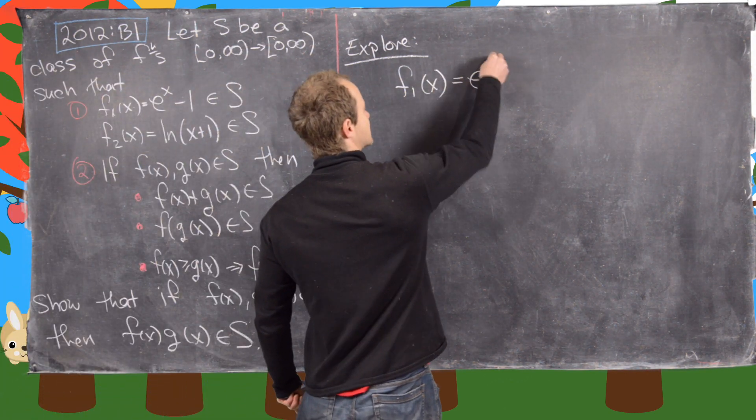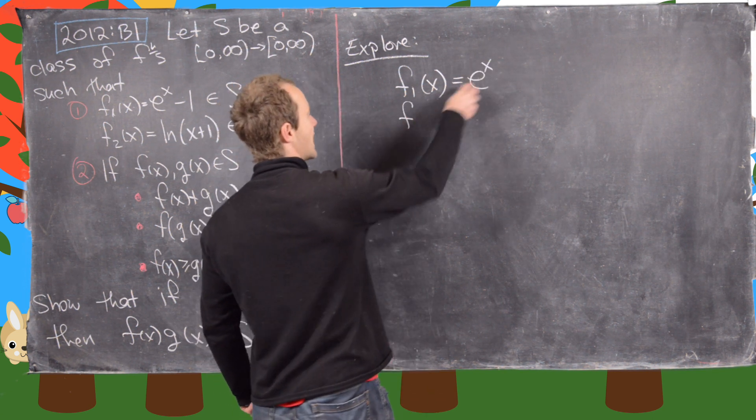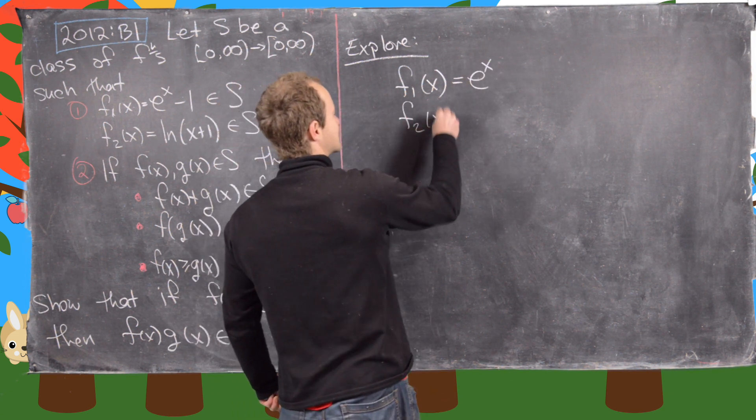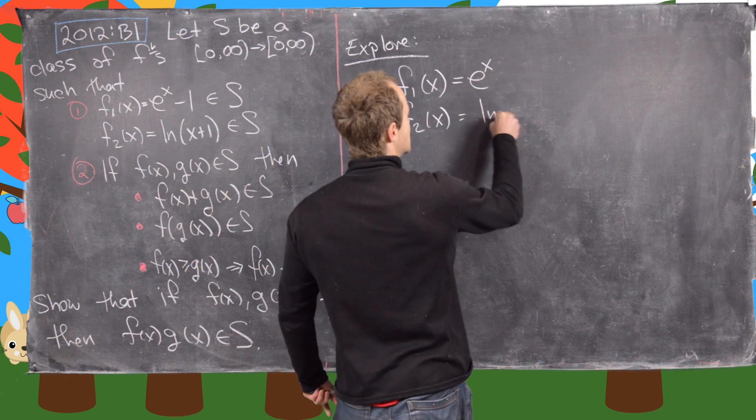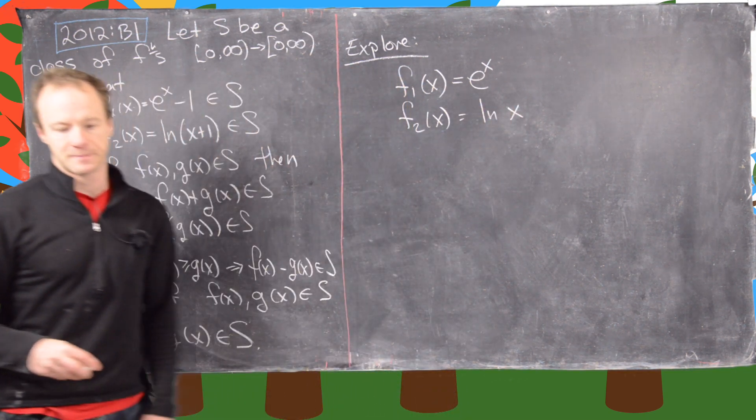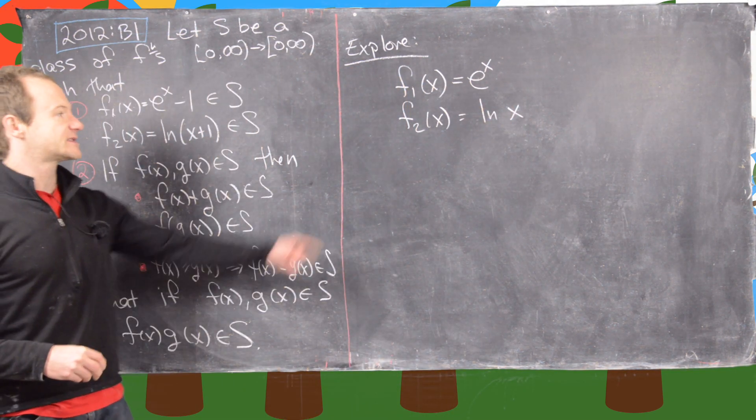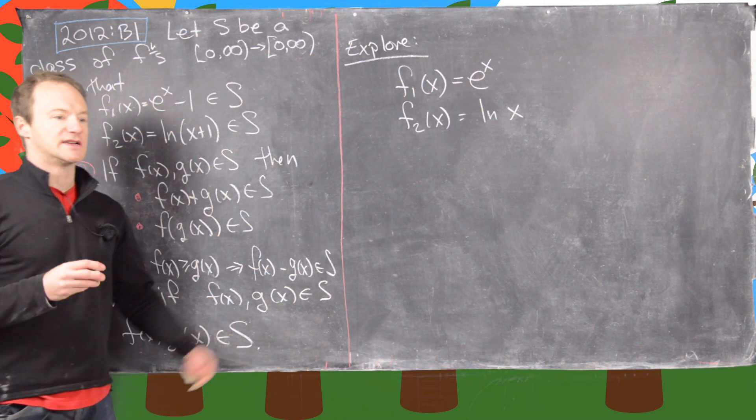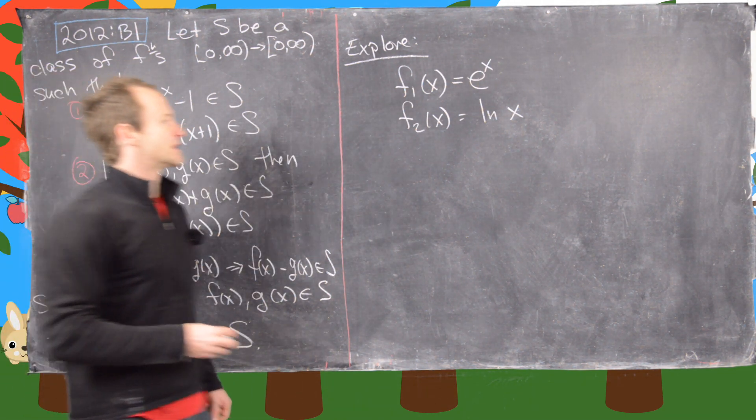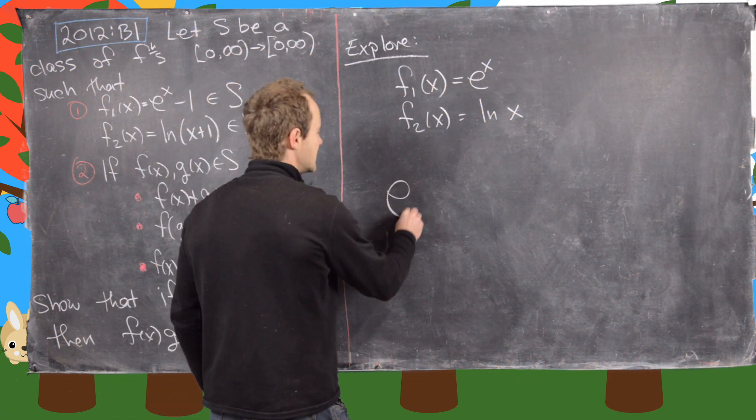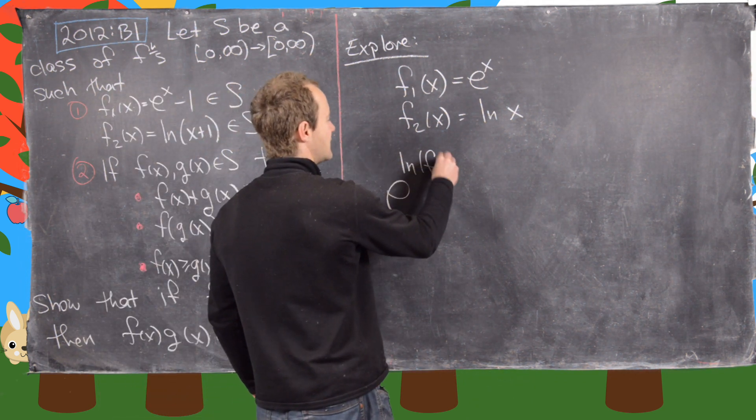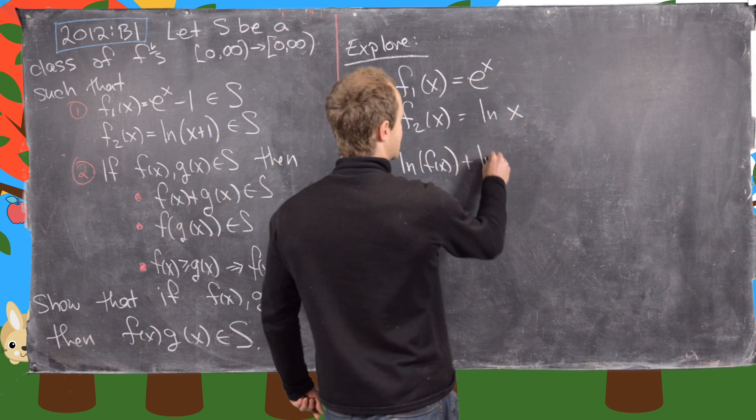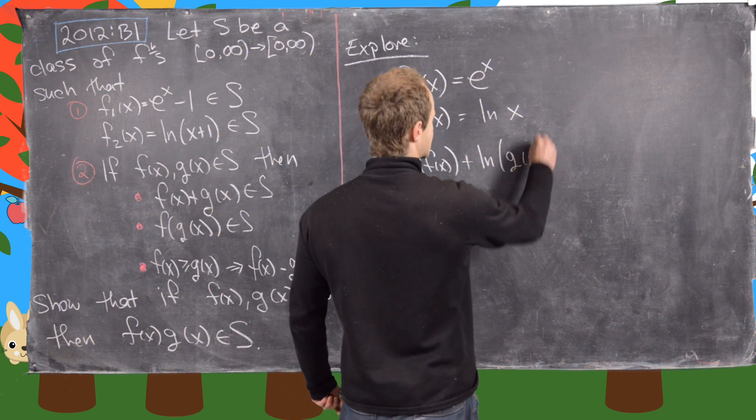So let's let f1 of x be e to the x and let's let f2 of x be just the natural log of x. And now notice by composing these in the right way, we can turn a sum into a product. So let's take e to the natural log of f of x plus the natural log of g of x.